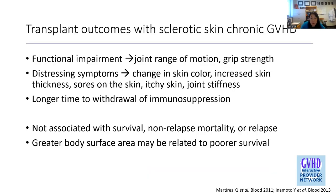In terms of transplant outcomes associated with sclerotic skin GVHD, we see functional impairment — impacting joint range of motion and grip strength, affecting activities of daily living. The burden of symptoms includes distress from change in skin color, increased skin thickness, sores, itchy skin, and joint stiffness. It has also been associated with a longer time to withdrawal of immunosuppression, but has not been associated with survival, non-relapse mortality, or relapse, though greater body surface area may be related to poorer survival.